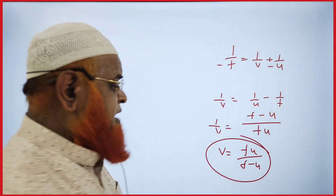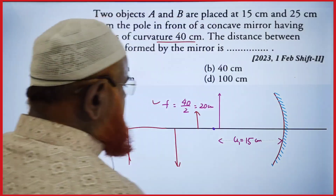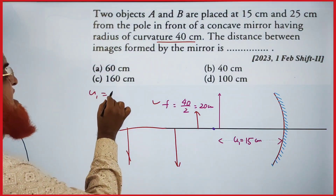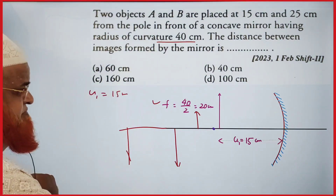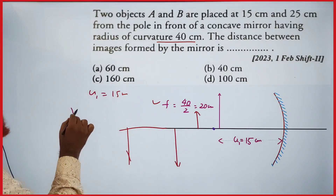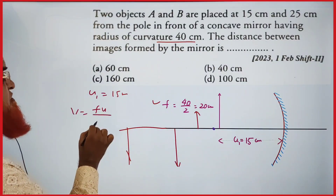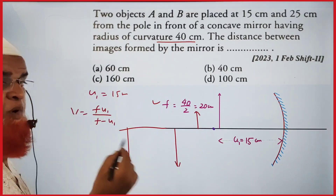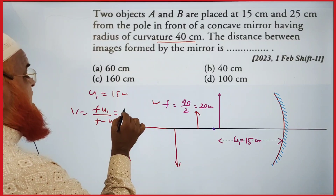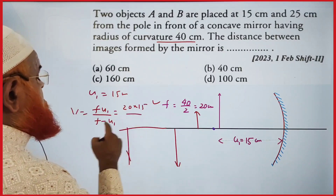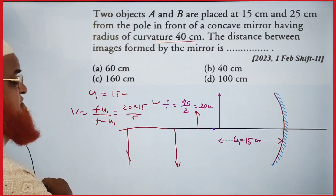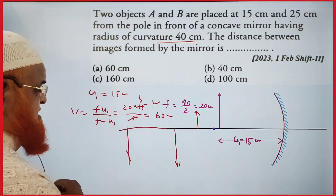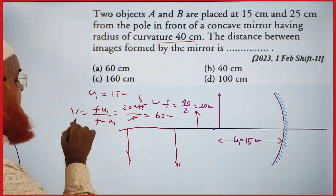He has given u₁ = 15 centimeters. Substituting in the shortcut formula: v₁ = f·u₁ / (f − u₁) = 20 × 15 / (20 − 15) = 300 / 5 = 60 centimeters. So the first image distance v₁ is 60 centimeters.